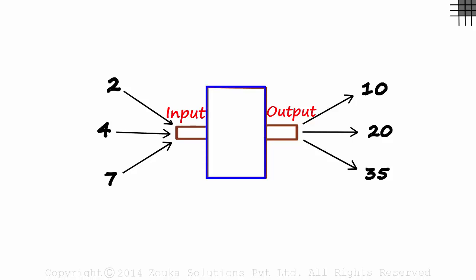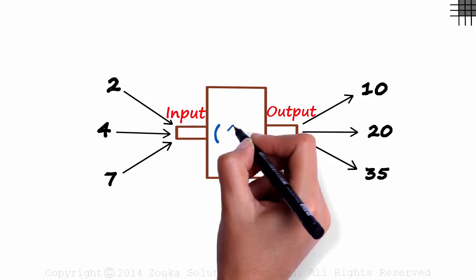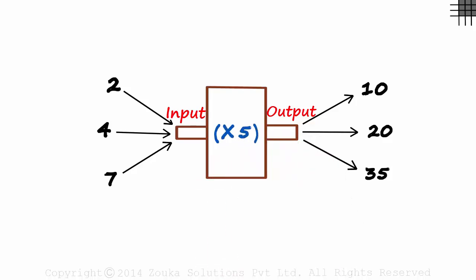What is this box doing to the inputs? You would have probably guessed, it is just multiplying the inputs by 5. 2 times 5 is 10, 4 times 5 is 20, and 7 times 5 is 35.